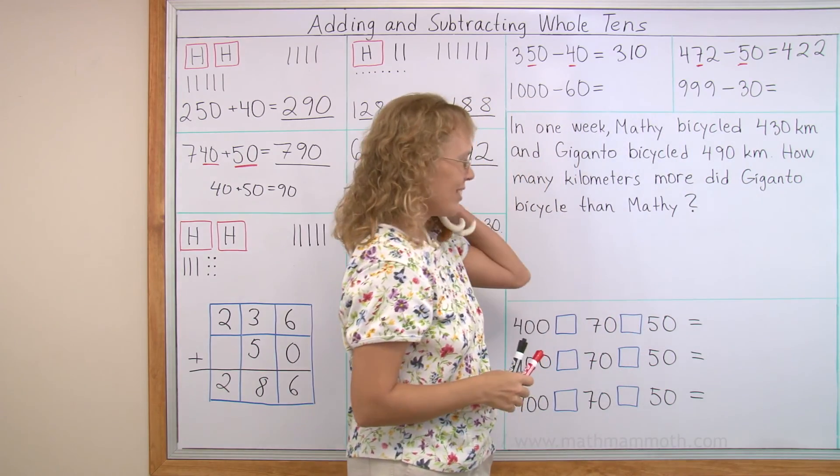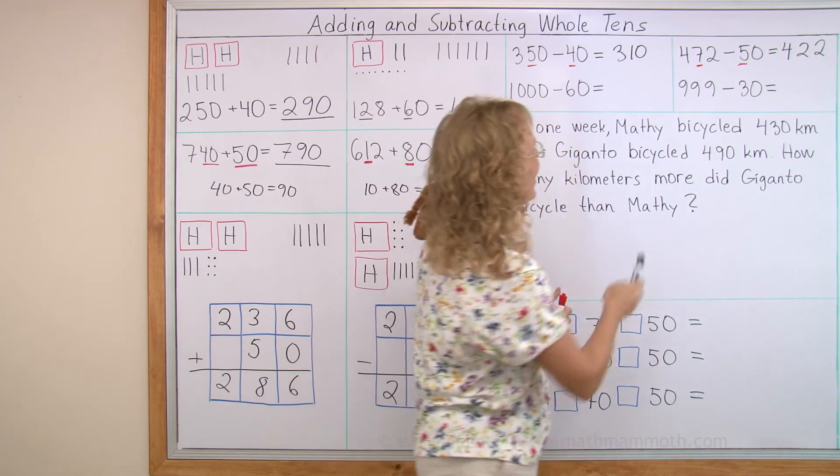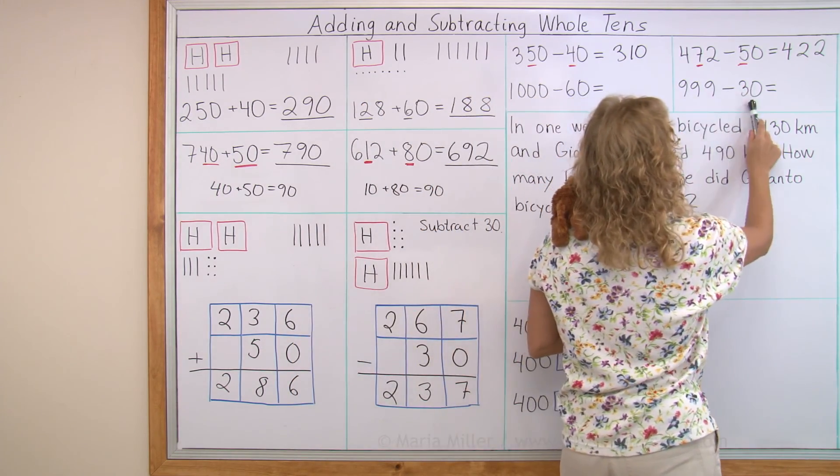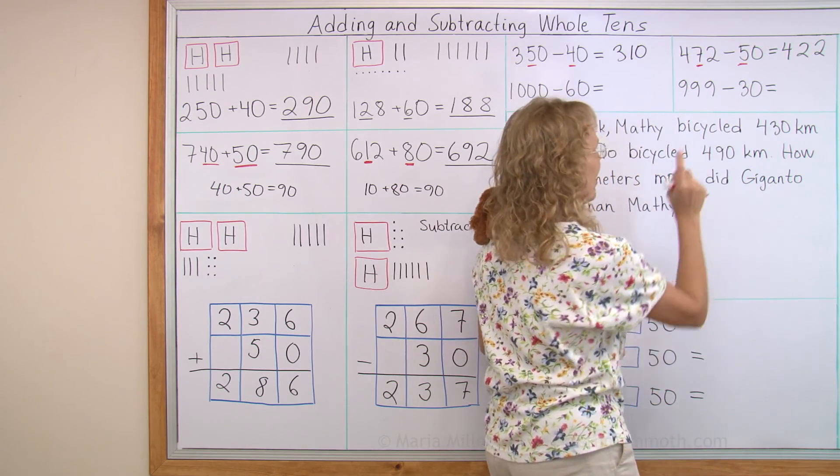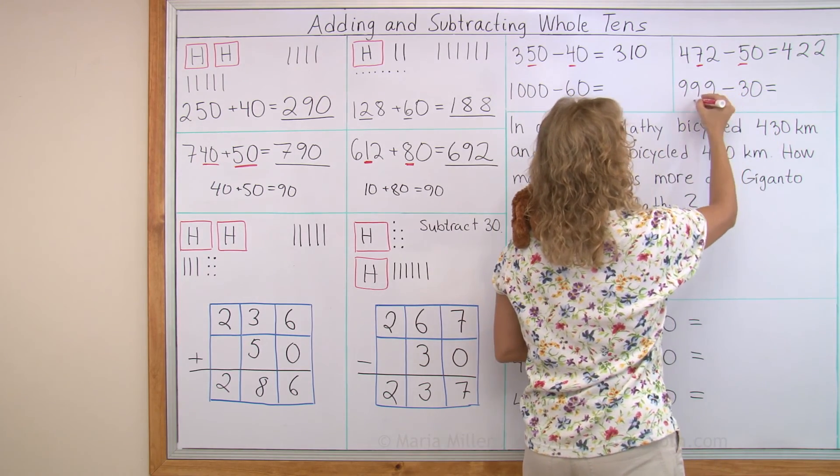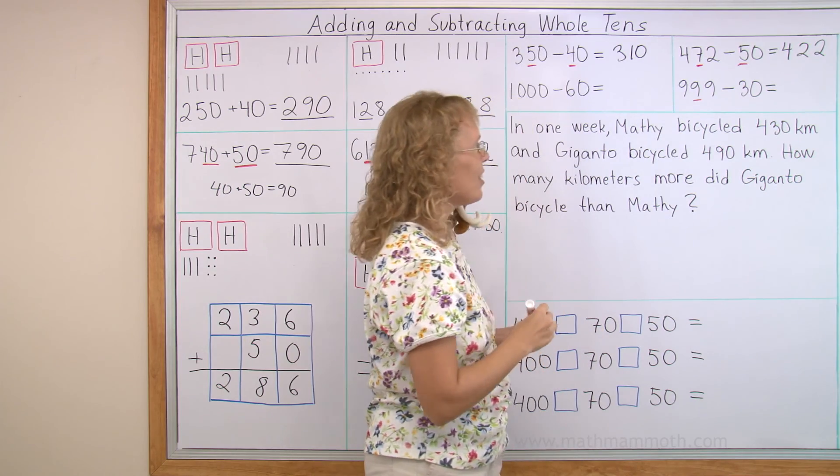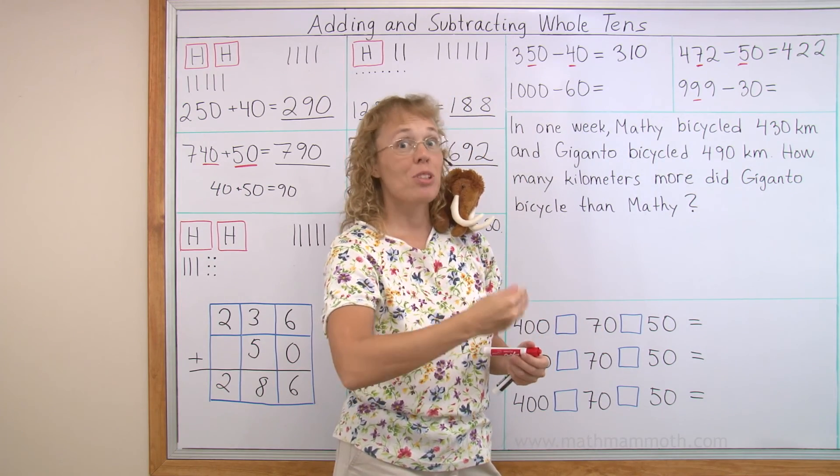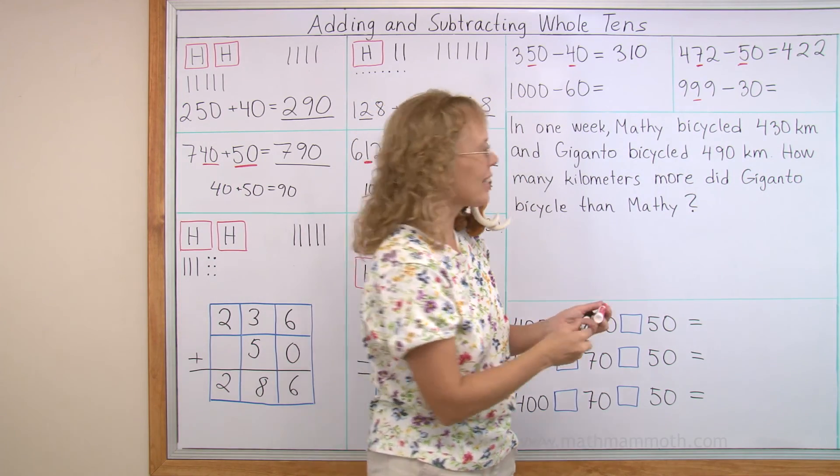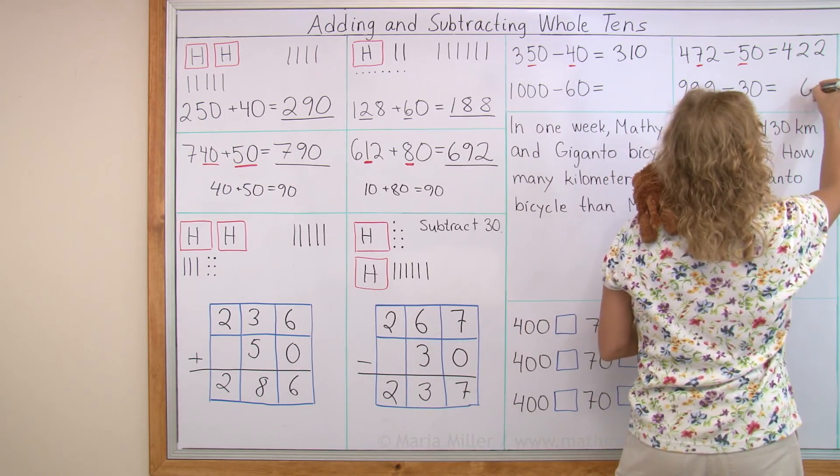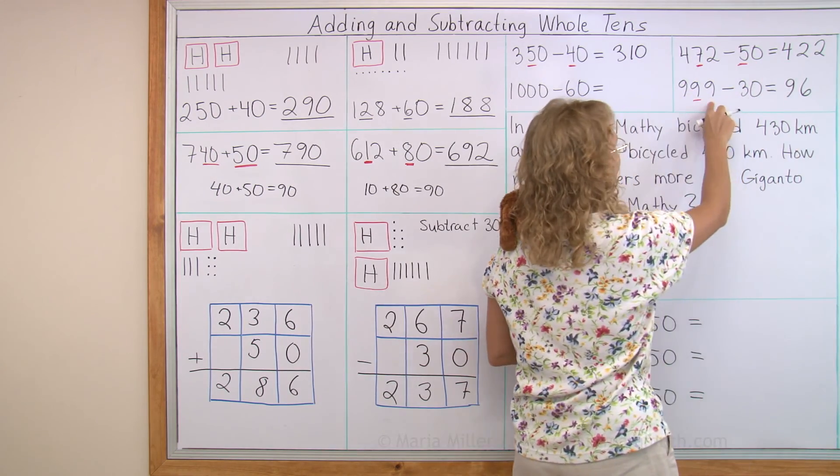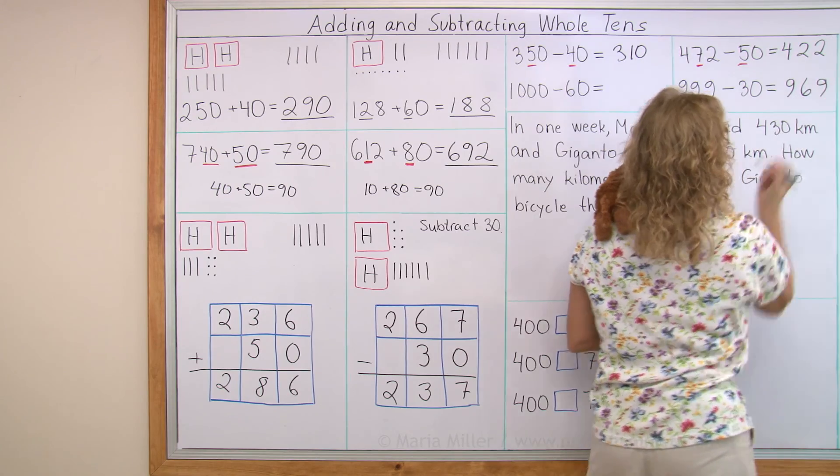Look Matthew, your favorite number. Yeah, he likes that, 999 minus 30. Again, this is three tens, look at your tens digit, the nine. Nine tens minus three tens, six tens, yep. And then we have the 900, and then we have the nine ones that they don't change.